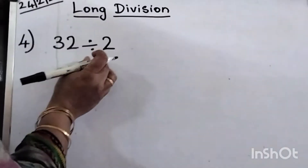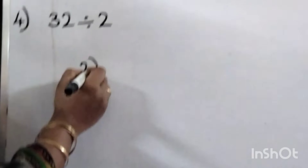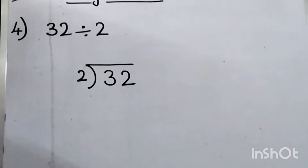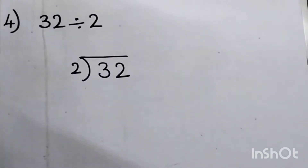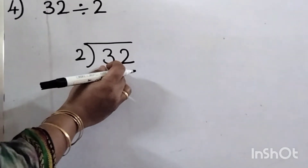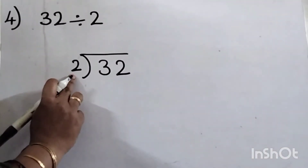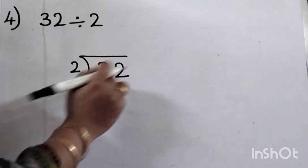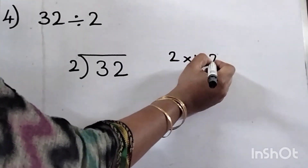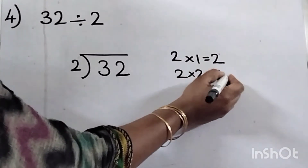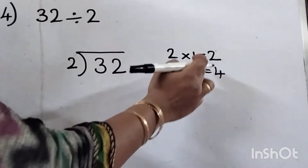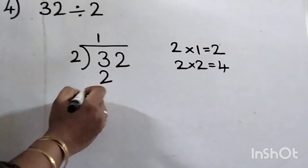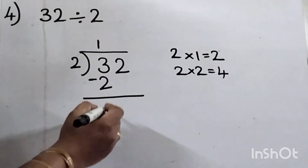Next sum: 32 divided by 2. Whenever I start division, I should look for the first digit. The first digit is 3, which is greater than the divisor 2, so I can divide with one digit. 2 ones are 2, 2 twos are 4 — there is no 3 in the 2 times table. So look for the nearest lesser number — it is 2. So 1 times 2, then 3 minus 2 is 1.